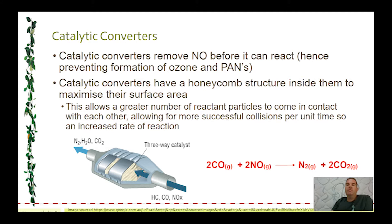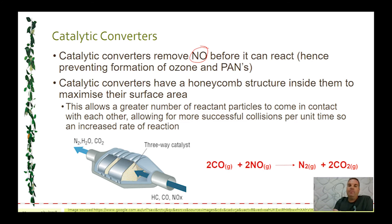To counteract the formation of photochemical smog, catalytic converters have been introduced into cars. They are designed to remove nitrogen monoxide — the primary pollutant — before it can react. If you can stop nitrogen monoxide from going into the atmosphere, it won't react to form nitrogen dioxide, you won't get ozone formed, and you won't get PANs formed. Catalytic converters have a honeycomb structure inside that increases surface area, allowing the oxides of nitrogen, carbon monoxide, and unburnt hydrocarbons to pass through.